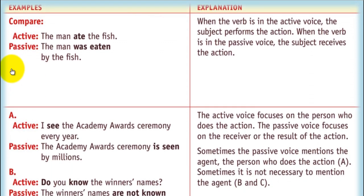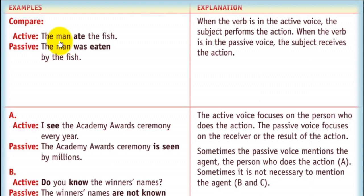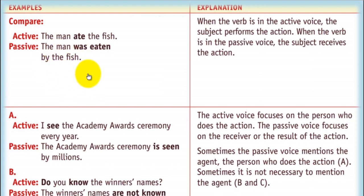Compare these examples. Active voice: 'The man ate the fish.' Passive: 'The man was eaten by the fish.' When the verb is in the active voice, the subject does the action — the man is the person who ate the fish. When the verb is in the passive voice, the subject receives the action. The subject is the man: 'The man was eaten by the fish.'